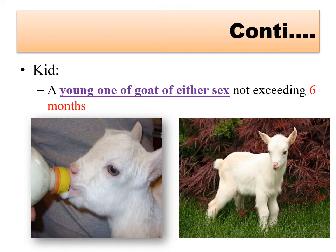A kid is a young one of goat of either sex up to six months of age. It was called a calf in cattle and buffalo, and lamb in sheep, but in the case of goat the young one of either sex up to six months of age is called a kid - K-I-D.